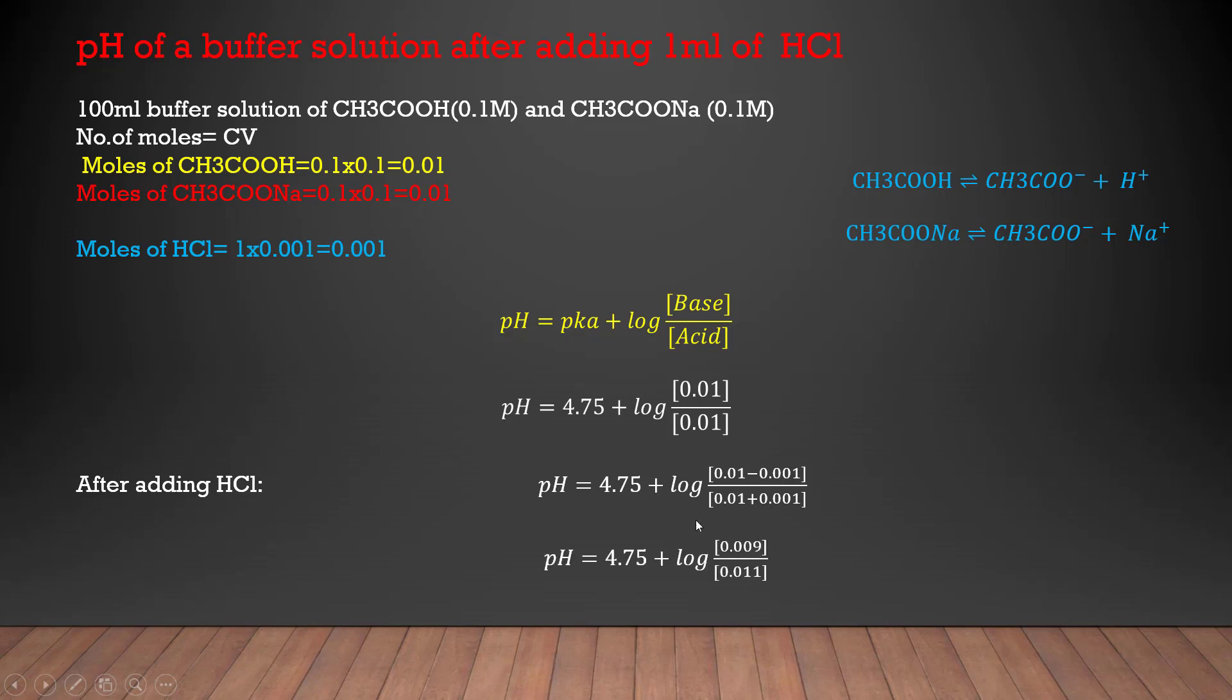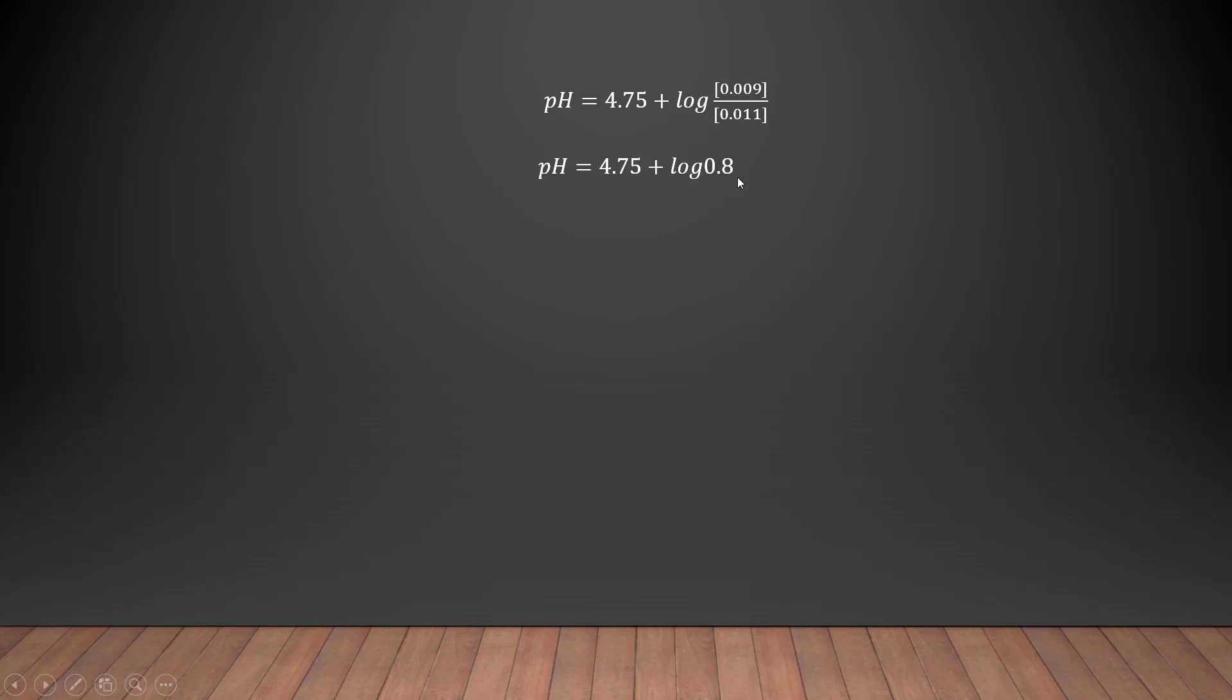Let's take the log of 0.8 and this comes out to be negative 0.096 and after subtracting it from 4.75 we get this value pH is equal to 4.65.